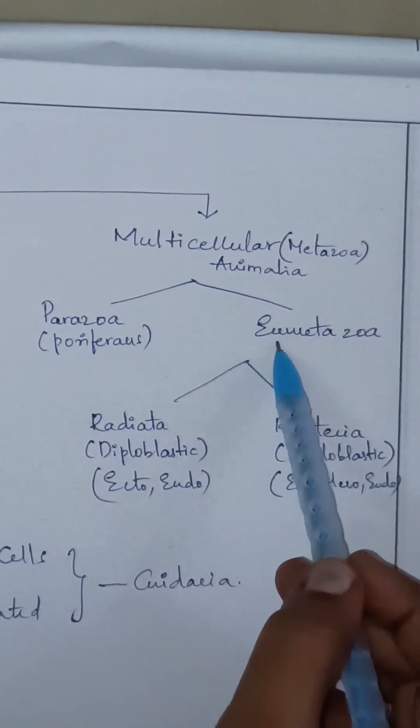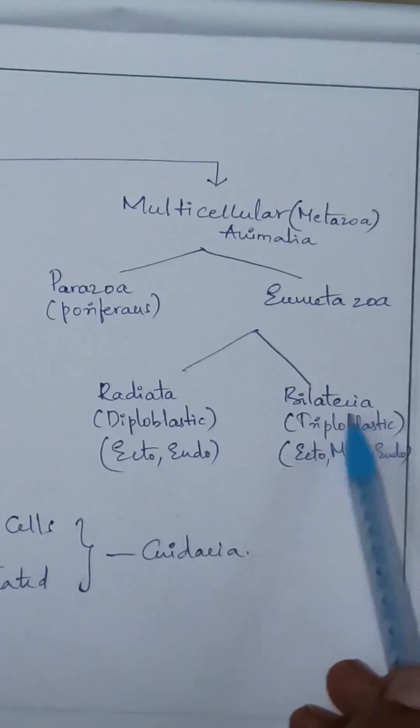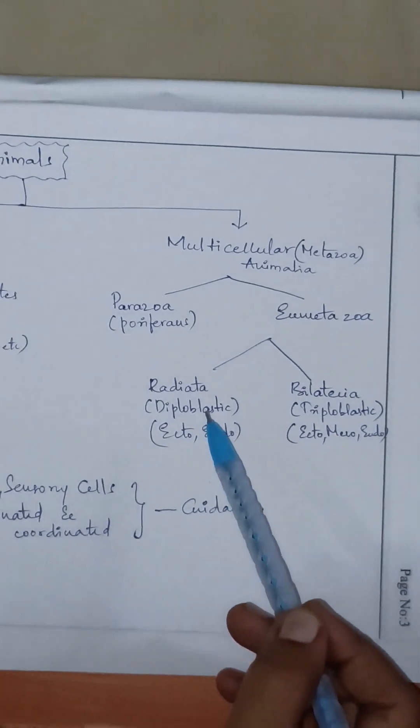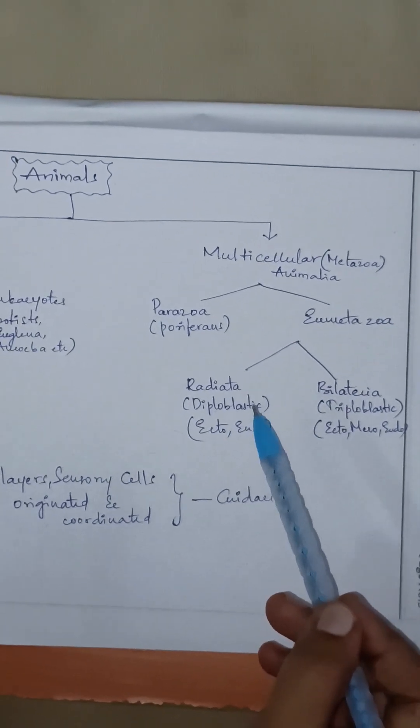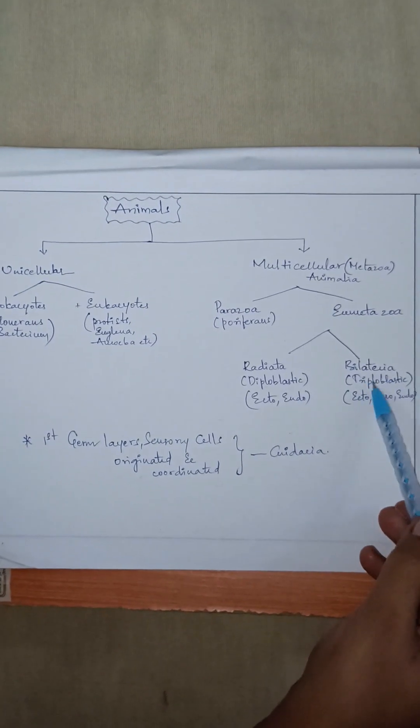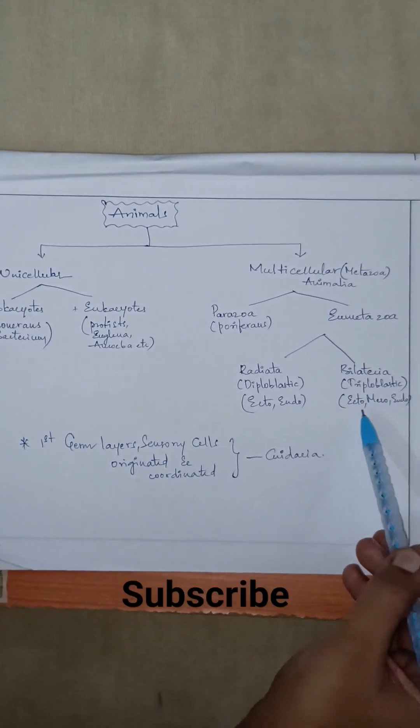Radiata are diploblastic animals in which cells are arranged in two embryonic layers: the external ectoderm and internal endoderm. Bilateria are triploblastic animals with three embryonic layers including ectoderm.